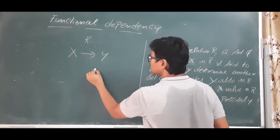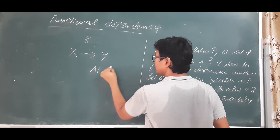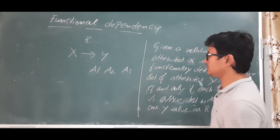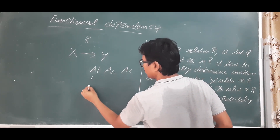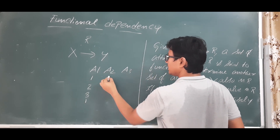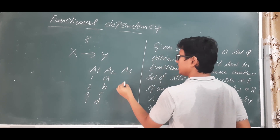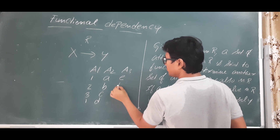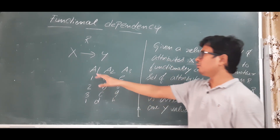Let me take a small example. I have some attributes A1, A2, A3 in a relation. A1 has values 1, 2, 3, 1. A2 has values a, b, c, d. A3 has values e, f, g, h.